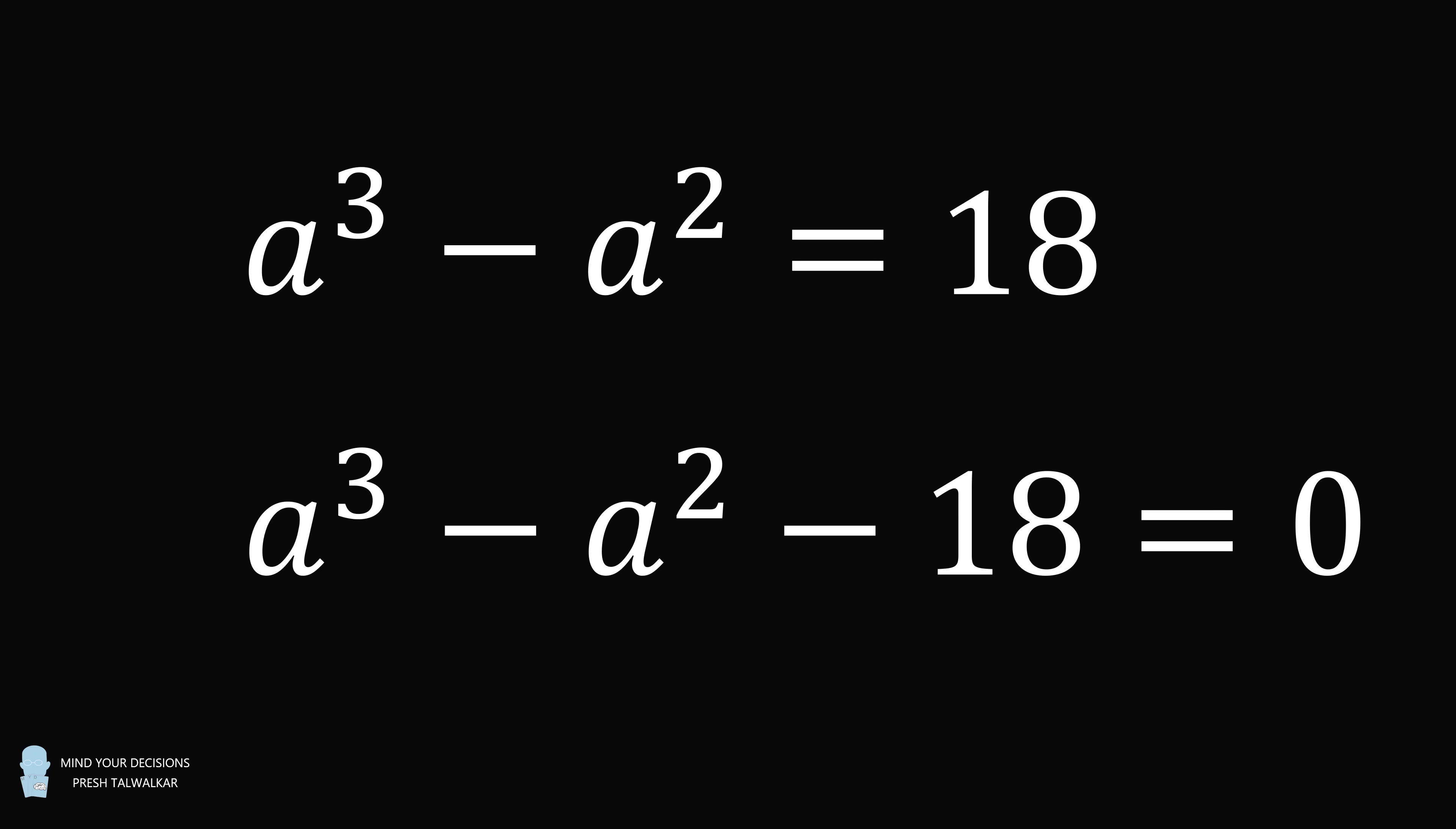The first thing we'll do is subtract 18 from both sides so we have a cubed minus a squared minus 18 is equal to 0. This is the standard form of the polynomial and we now want to solve for the roots or zeros of the polynomial.